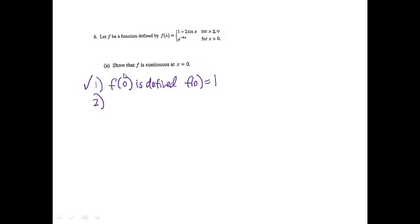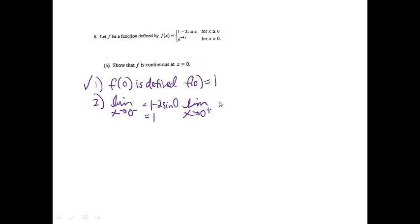Condition 2 is that the limit exists, so we need to find the limit as x approaches 0 from the left, and the limit as x approaches 0 from the right. Approaching 0 from the left means plugging 0 into the top function: 1 minus 2 sine 0, which equals 1. Plugging 0 into the second function gives e to the negative 4 times 0, which is e to the 0, which equals 1. So the left-hand limit equals the right-hand limit, which equals 1.